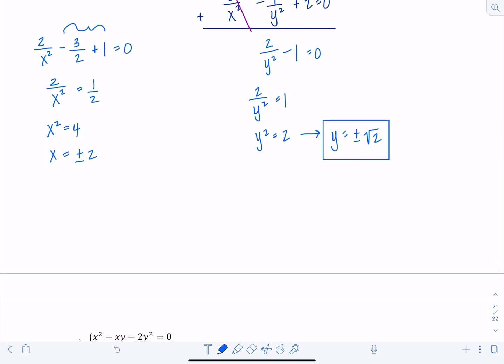So that means I have four solutions in total. So x is positive 2 if y is positive root 2, or x could be negative 2 if y was negative root 2. And similarly, x could be positive 2 if y was negative root 2, or negative 2 if y was positive root 2. Did I get them all? Negative, negative, positive, negative, negative, positive, positive, positive. Yep, that's all of them.